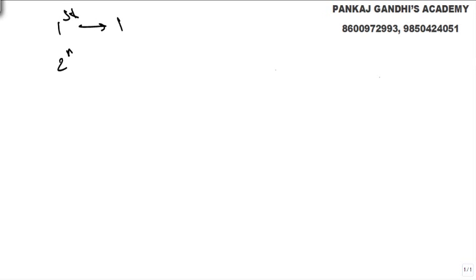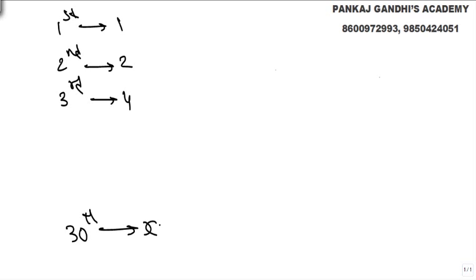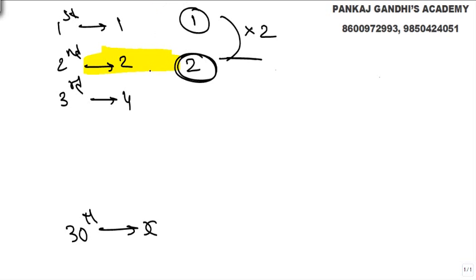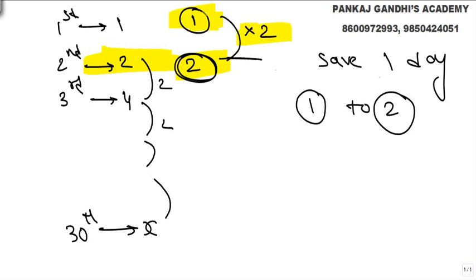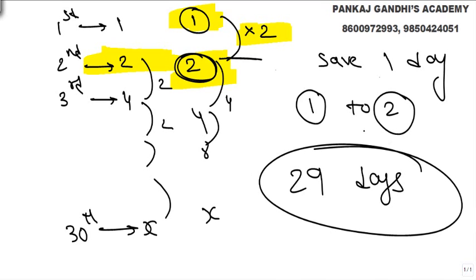Same question: first day one bacteria, second day two bacteria, third day four, going on doubling. On the 30th day we have x. Now if we start with two bacteria, the doubling from one to two is saved, but from two onward everything is the same — doubling, doubling, doubling. We save just one day of doubling, from one to two. Everything else is as it is — two to four, four to eight, and so on. So starting with two bacteria, the answer is still 29 days to fill the complete dish.